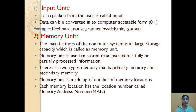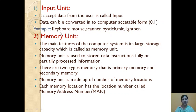The first unit is the input unit. Input means it accepts data from the user. That data is converted into a computer-acceptable form — the computer understands only binary format, meaning 0 and 1. Some examples of input units are: keyboard, mouse, scanner, joystick, microphone, and light pen.